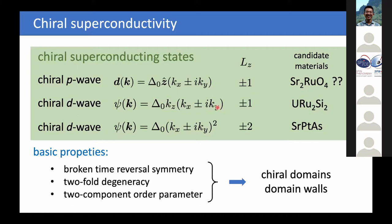There is a chiral D-wave state which has a form that is nodal in the basal plane; for kz equals zero, it also has angular momentum plus or minus along the C-axis. These two states can be realized in tetragonal materials, and the second state has been considered as a candidate for explaining superconductivity in uranium ruthenium to silicon-2. Then there is a chiral P-wave state with angular momentum 2, which is a singlet state and a candidate for strontium platinum arsenic, a system with hexagonal symmetry.